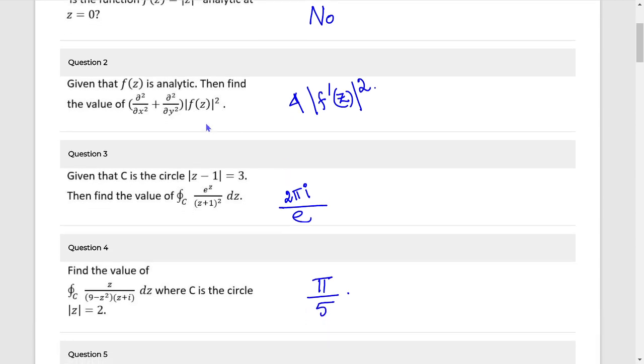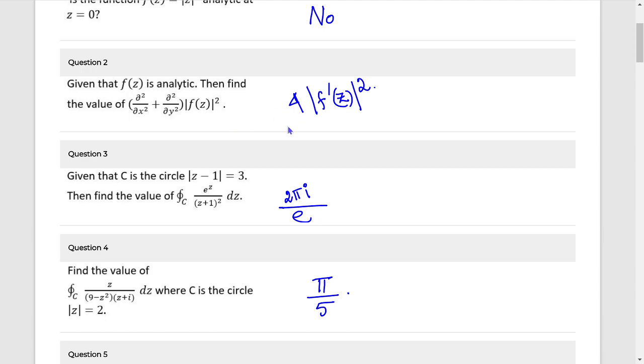Next is analytic. Mod F(z) square. So the answer is 4 into F dash z square. If you see the real part of it, it will be 2. So this is the distinction.